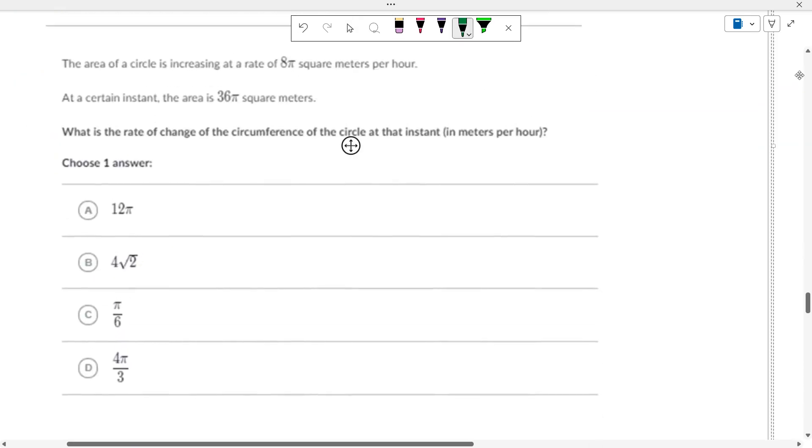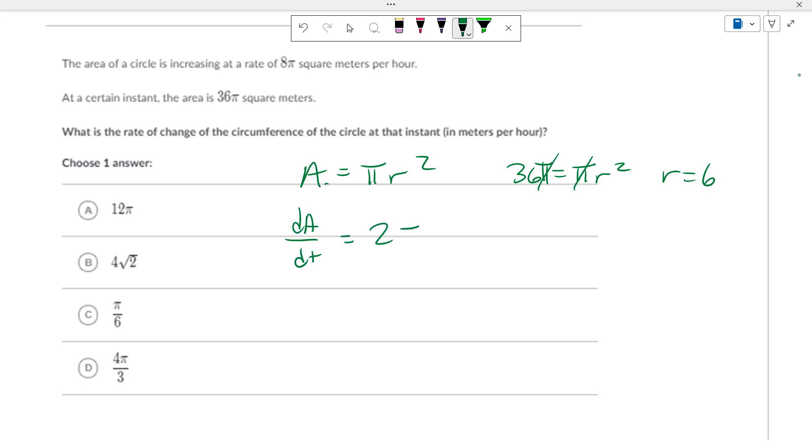The area of a circle is increasing at that, and we're going to want the circumference. So, this is the advanced one. So, area equals pi r squared. So, at a certain instance, the area is 36. So, 36 equals pi r squared. 36 pi equals pi r squared. So, r equals 6. So, dA/dt equals 2 pi r dr/dt. And we want to figure out what dr/dt is.